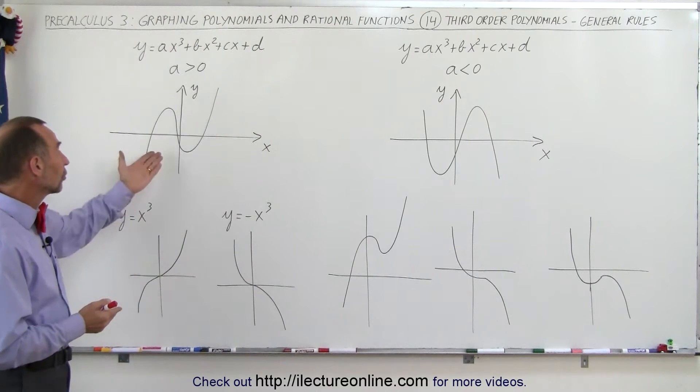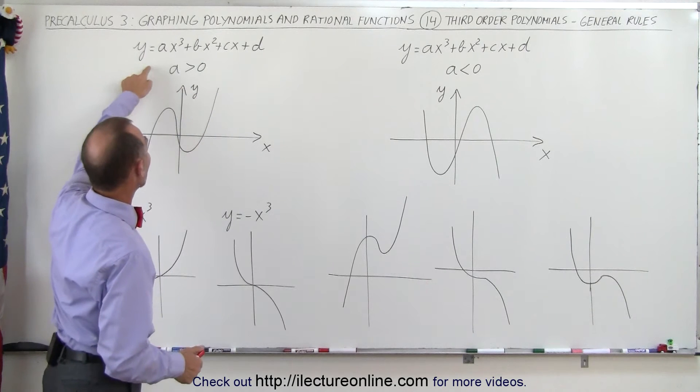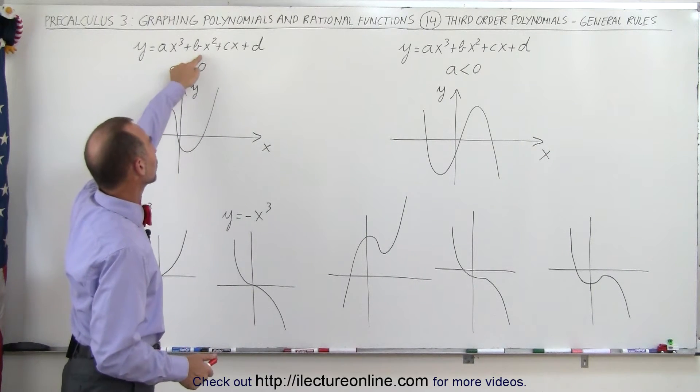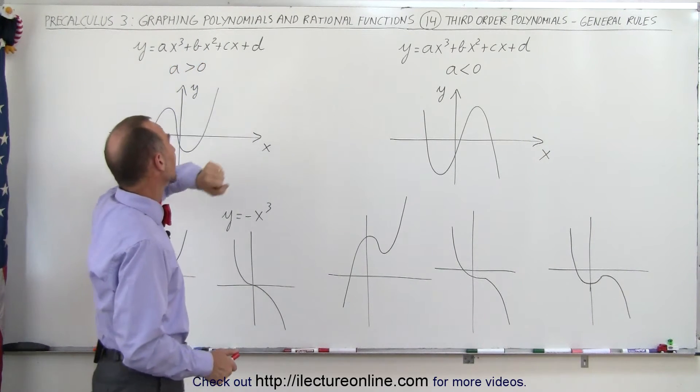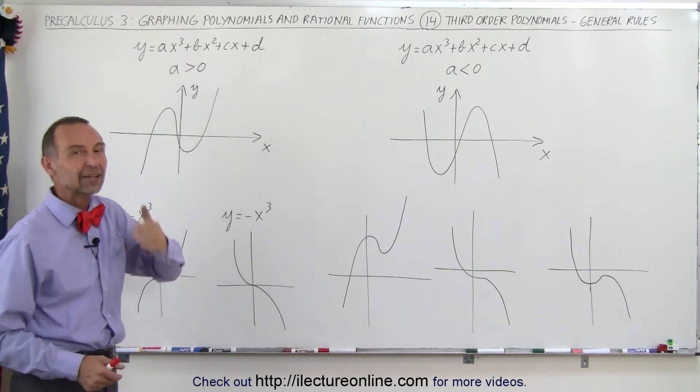Typically, they will look something like this, or they will look something like that. Notice the general equation is y equals ax cubed plus bx squared plus cx plus d. And in the case where the coefficient in front of the first term, the x cubed term,